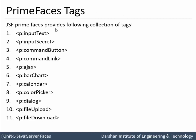JSF PrimeFaces provides the following collection of tags: p:inputText, which is very similar to the HTML input text tag; p:inputSecret for password fields; p:commandButton for submit buttons; p:commandLink for anchor tags; p:ajax for AJAX support; p:barChart for bar charts, which was not available in core tag libraries; p:calendar; p:colorPicker, which is also not available with basic tags; p:dialog for dialog boxes; and p:fileUpload and p:fileDownload for file operations.